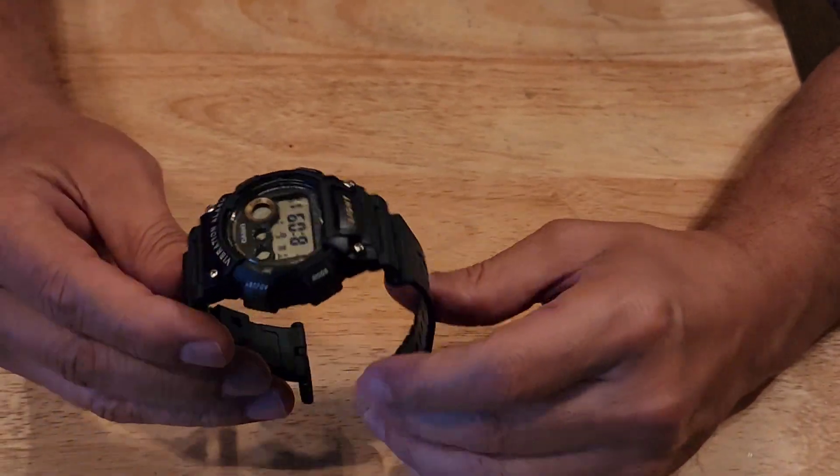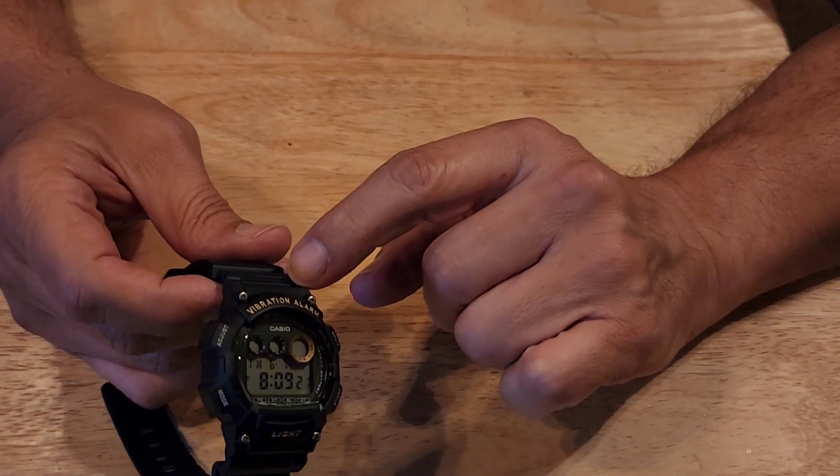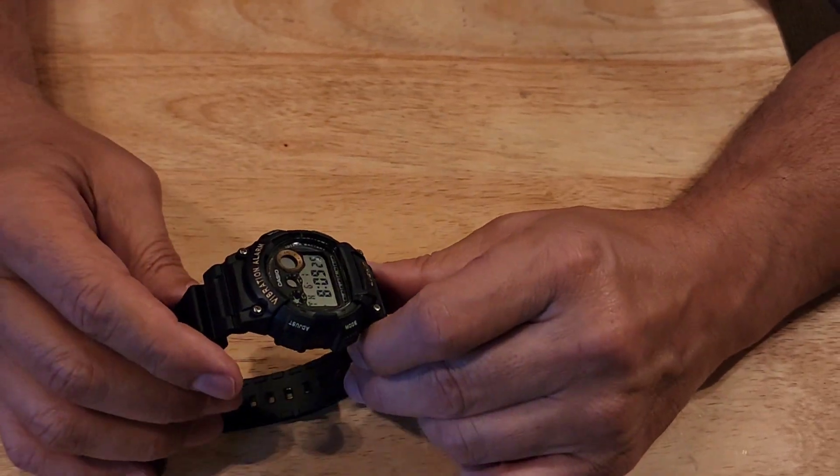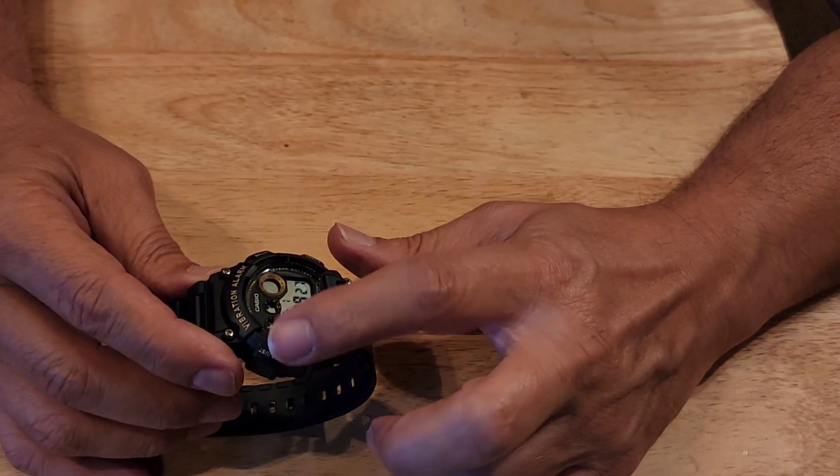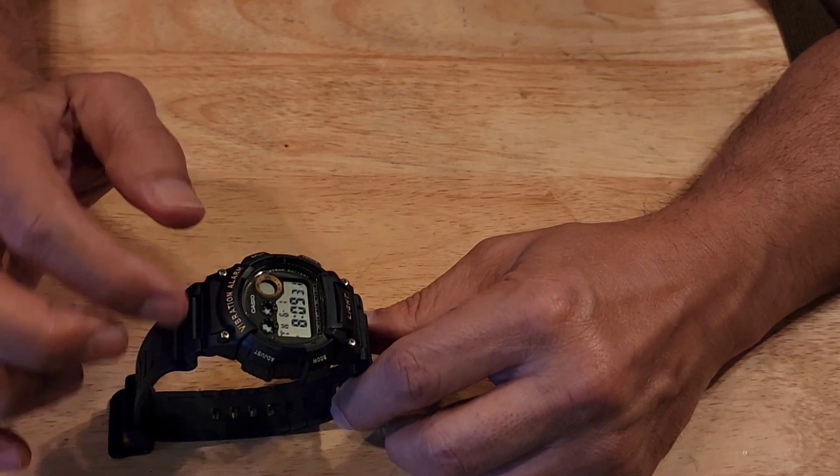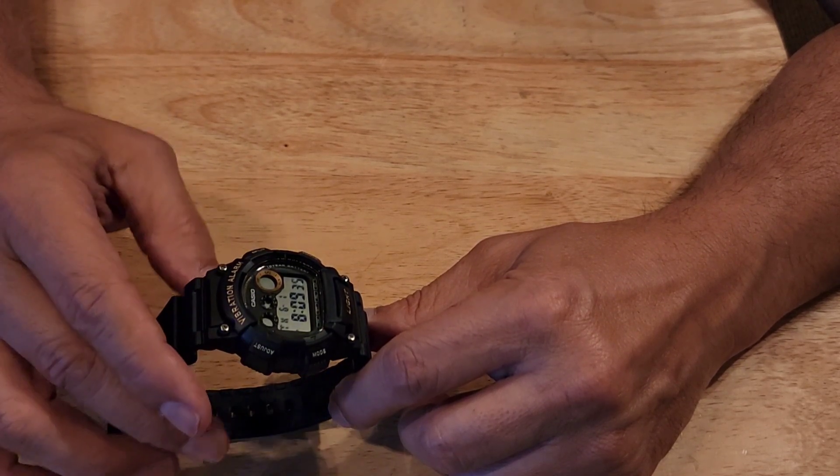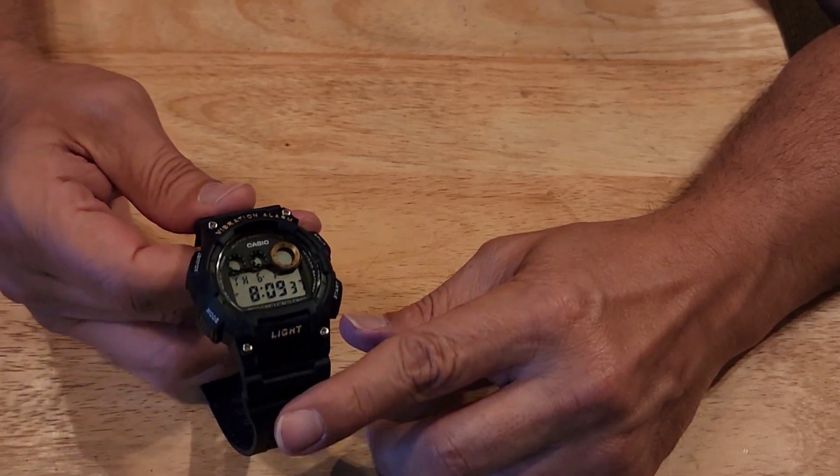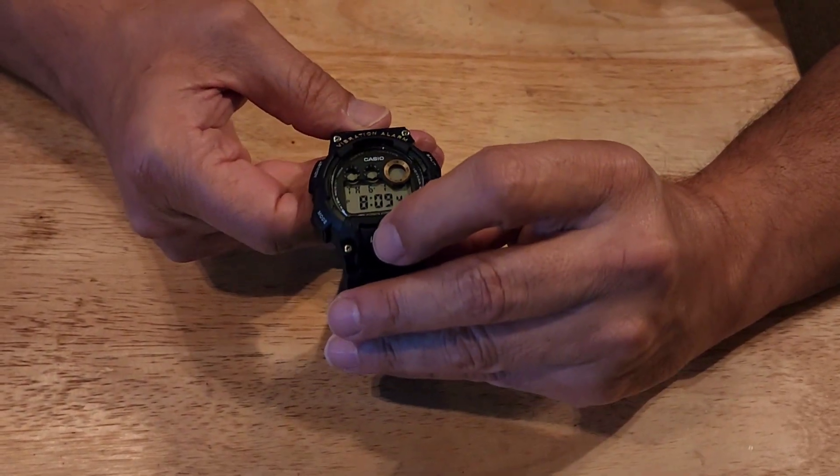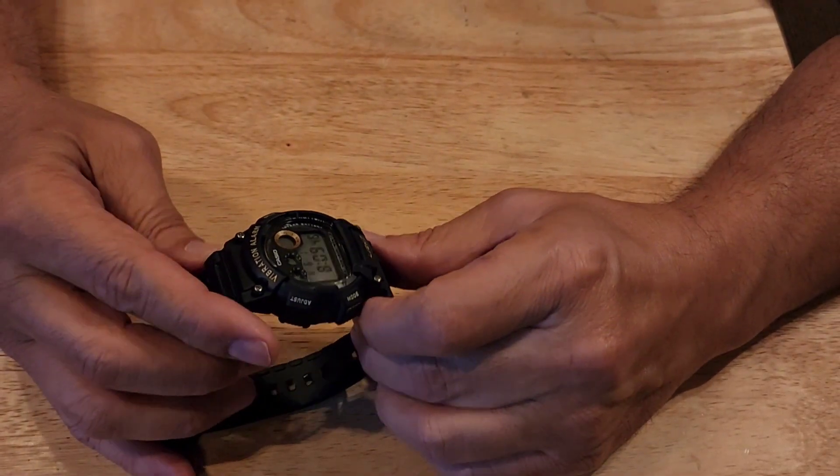It also has gold colors. One of its features is the vibration alarm - you can set it to vibrate. It also has a regular alarm and an hourly alarm too, if you want to be reminded every hour. The light's pretty good, and it has a countdown timer.